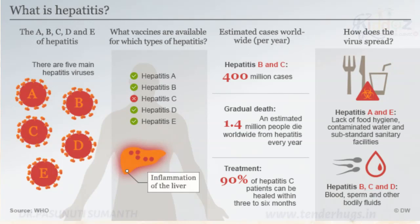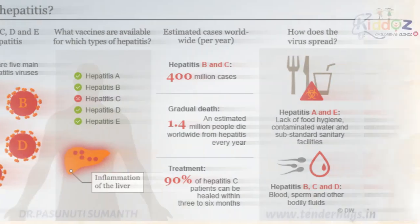Coming to virus spread, Hepatitis A and E spread by lack of food hygiene, contaminated water, and substandard sanitary facilities. Hepatitis B, C, and D are spread by blood, sperm, and other bodily fluids.